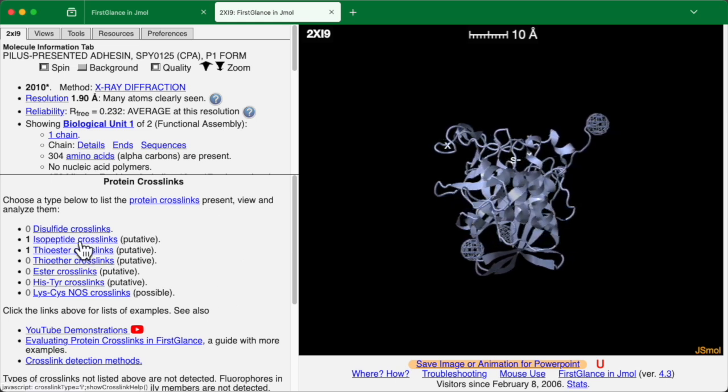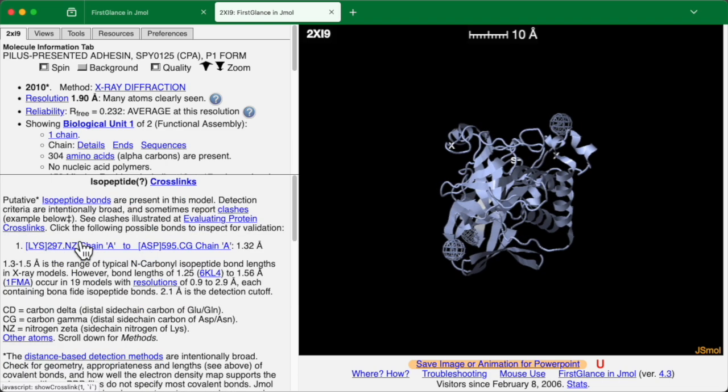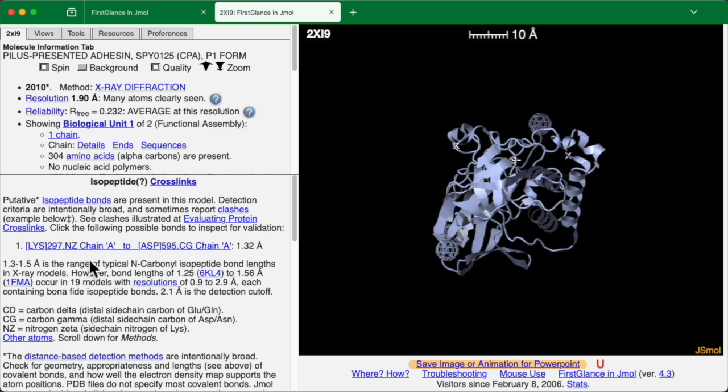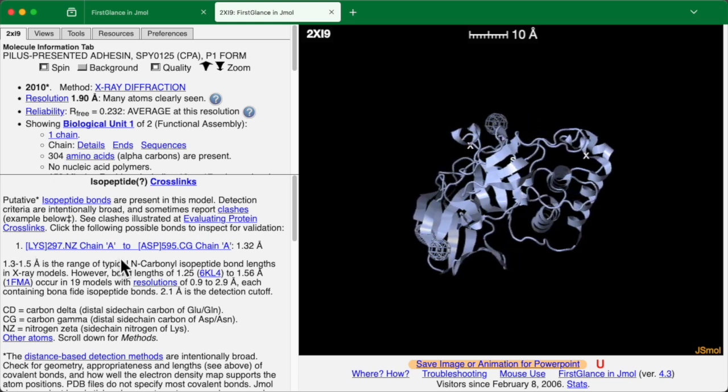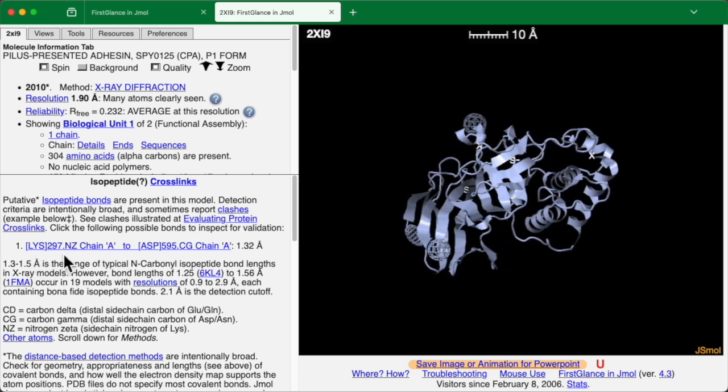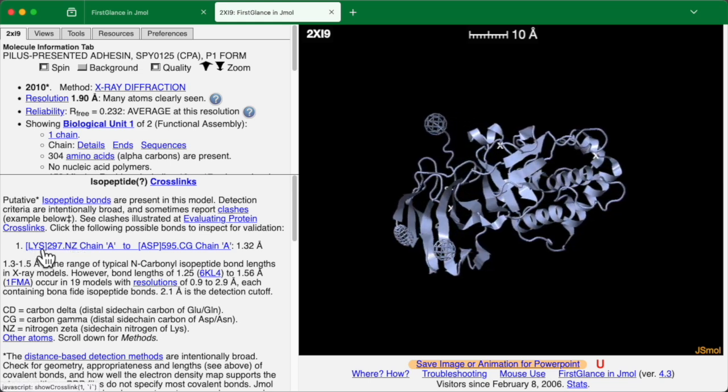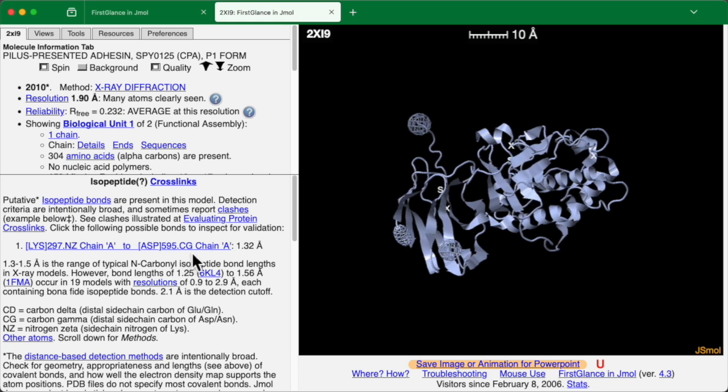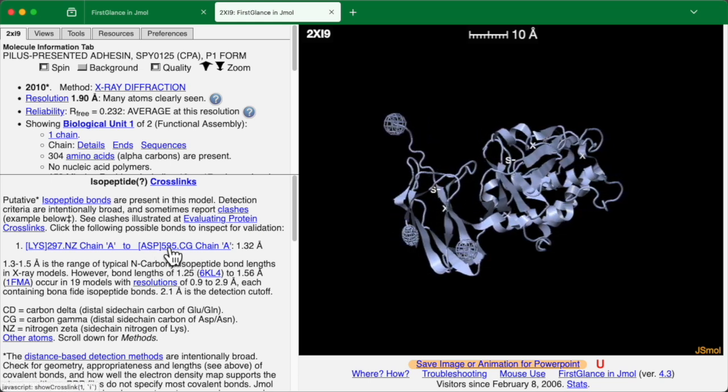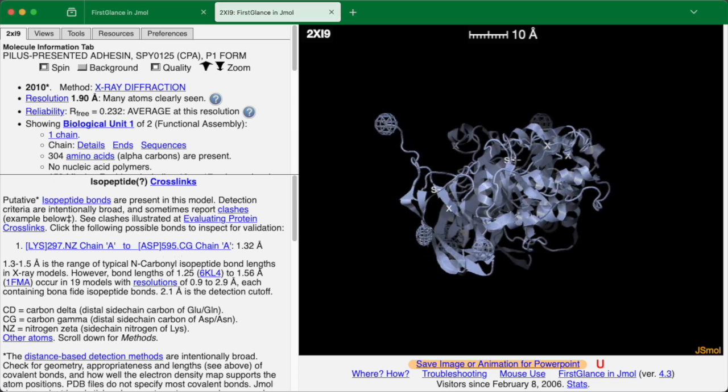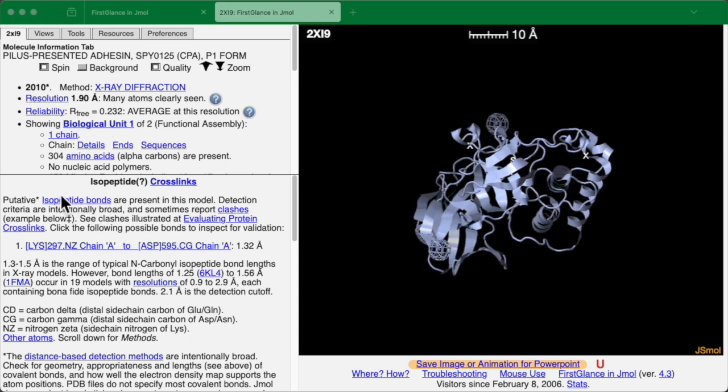Alright, so next we'll click on isopeptide crosslinks. And this tells us that there appears to be a bond between the zeta nitrogen of lysine 297 and the gamma carbon of aspartate 595.